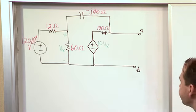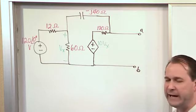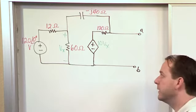So the first thing we want to do is figure out what is the open circuit voltage here between A and B, which will be our Thevenin voltage.